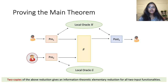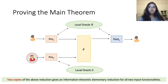To get a protocol that delivers outputs to both parties, we can simply run two copies of this reduction in parallel, where Alice acts as the receiver in one copy and Bob in the other. As a result, we obtain an information-theoretic elementary reduction for all efficiently computable two-input functionalities. But as discussed earlier, such a reduction implies constant-round protocols whose existence is a long-standing open problem in information theory.